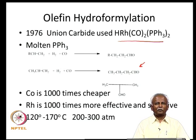The catalyst used by Union Carbide was HRh(CO)(PPh₃)₂, with molten PPh₃ used in the reaction medium above its melting point. They found they could convert propene to normal butyraldehyde in very good yield. Although cobalt is 1000 times cheaper, rhodium is 1000 times more effective, making it more economical in the long run. The temperatures and pressures must be kept high to drive the reaction to the right.